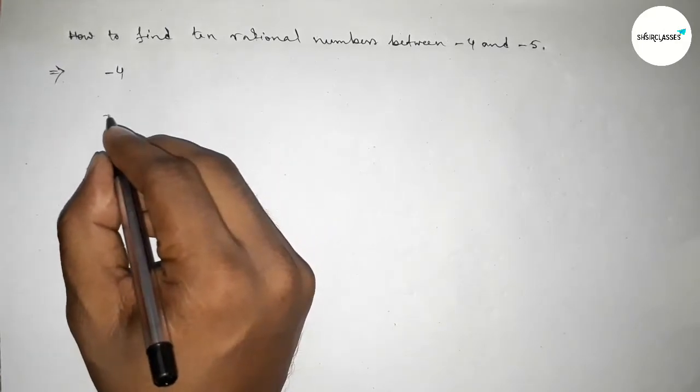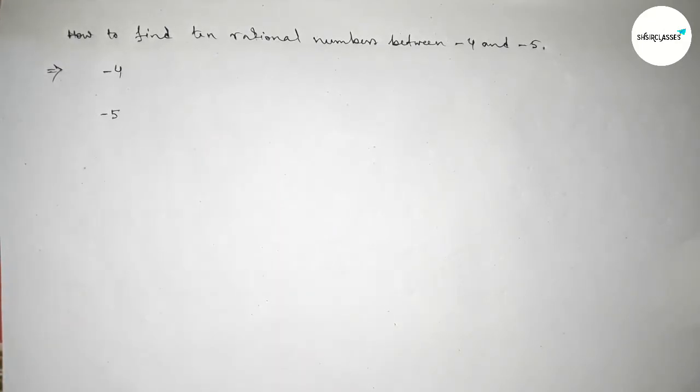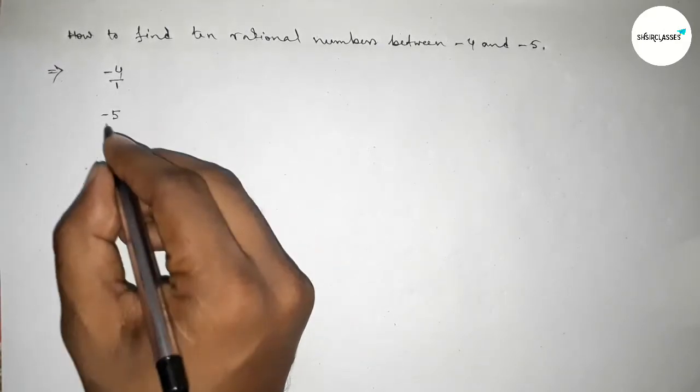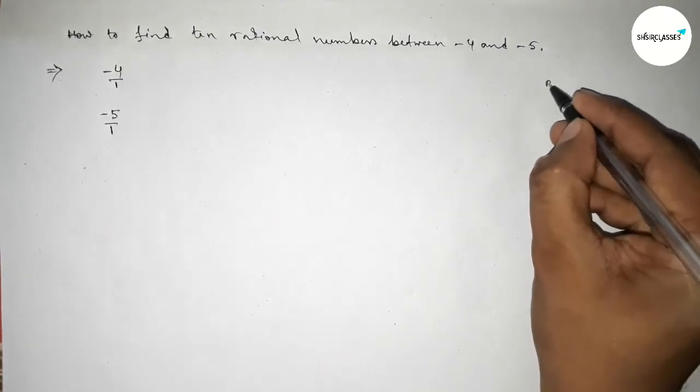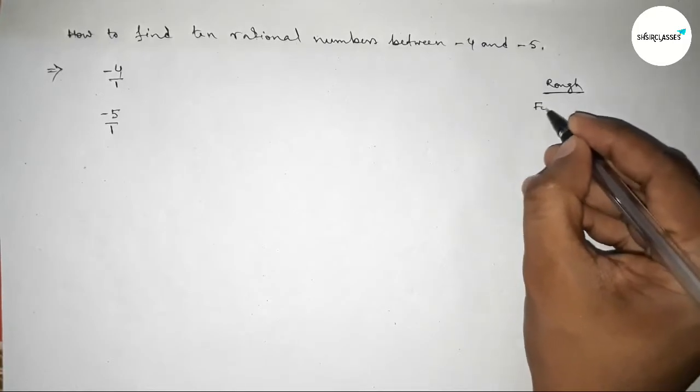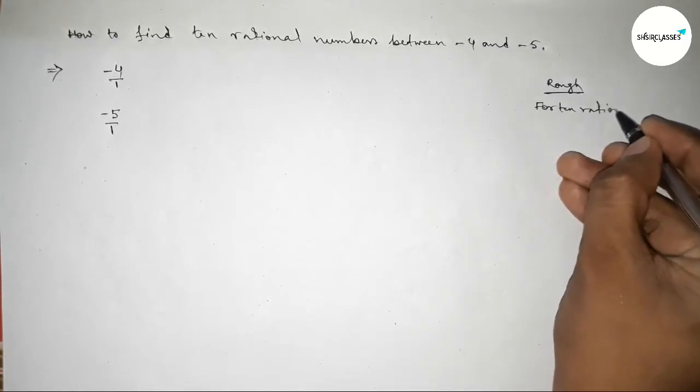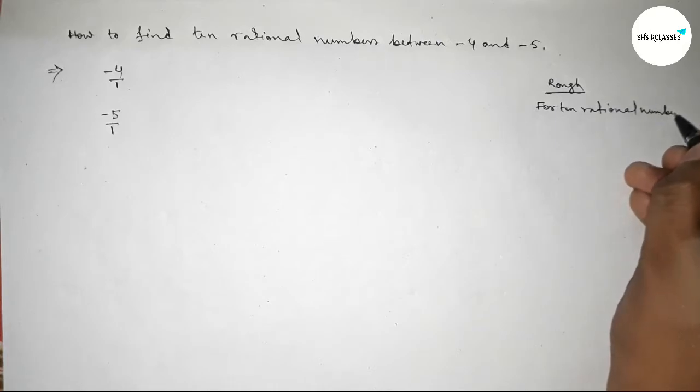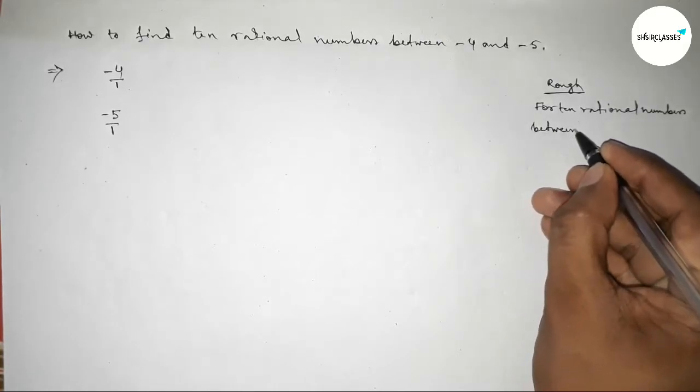Now we can write minus 4 as minus 4 over 1, and minus 5 as minus 5 over 1. Now I'm roughly discussing here an important method.